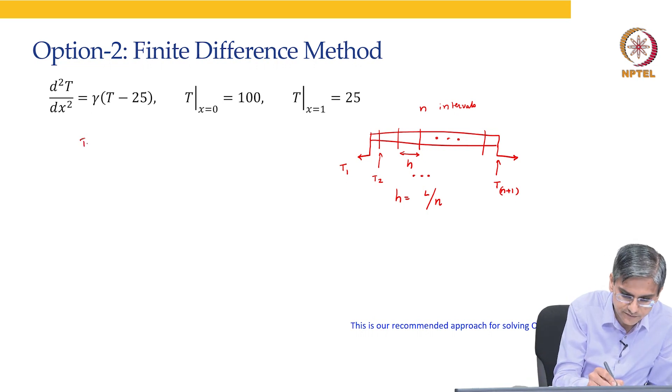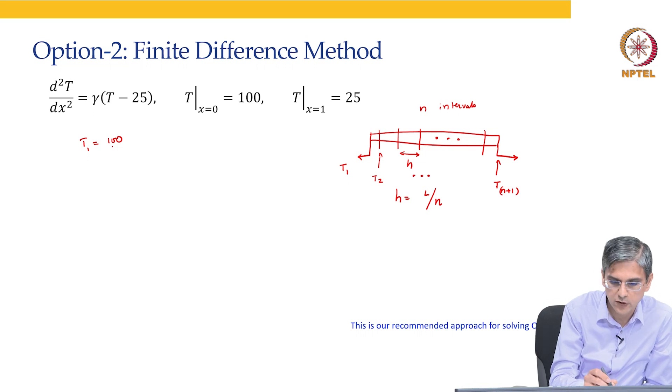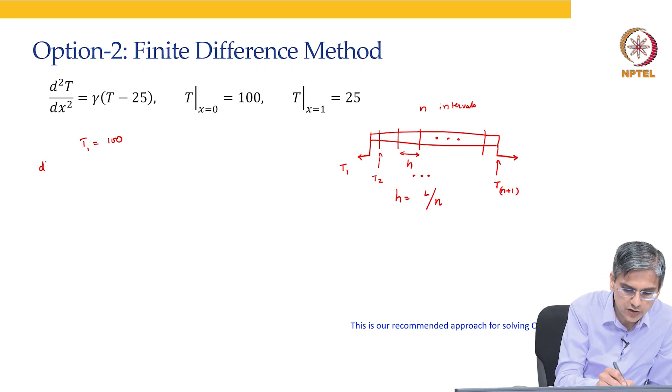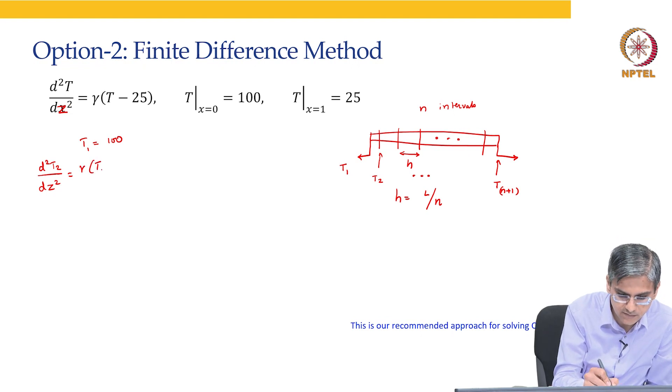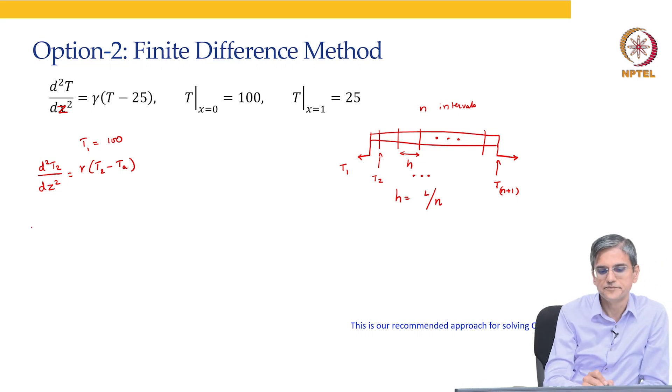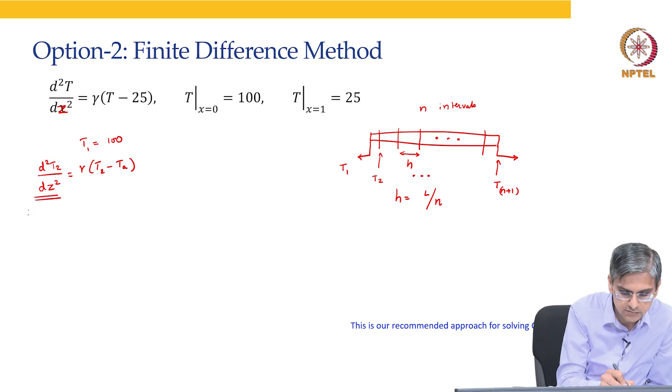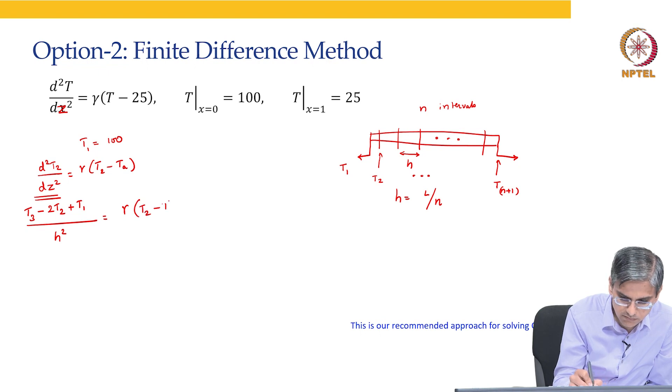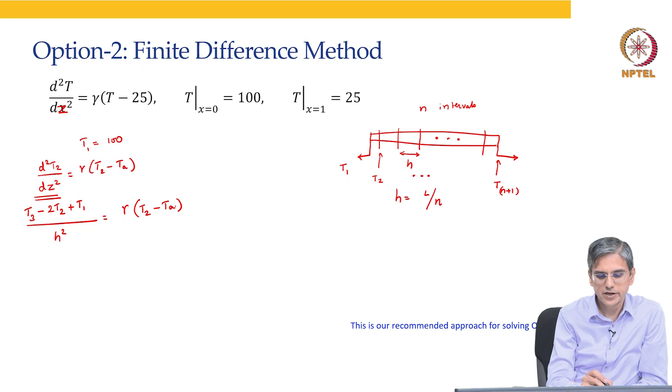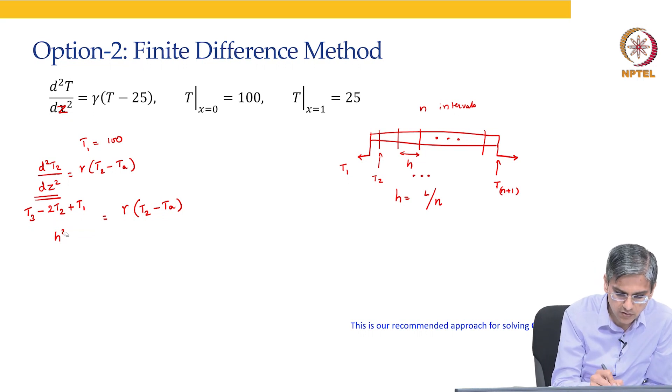At this point, boundary condition and at this point also is going to be boundary condition that will be used. This we will start off with t1, this will be t2 and this will go on up to t n plus 1. So, that is what is going to happen. Now, t1 is 100. What about t2? At t2, you have d square t2 by dz square.